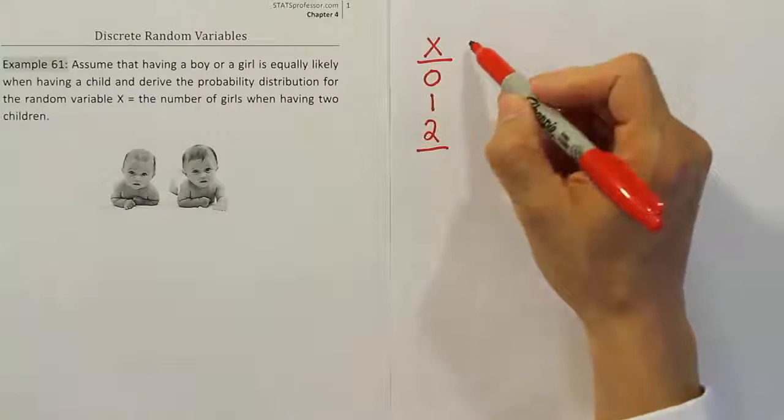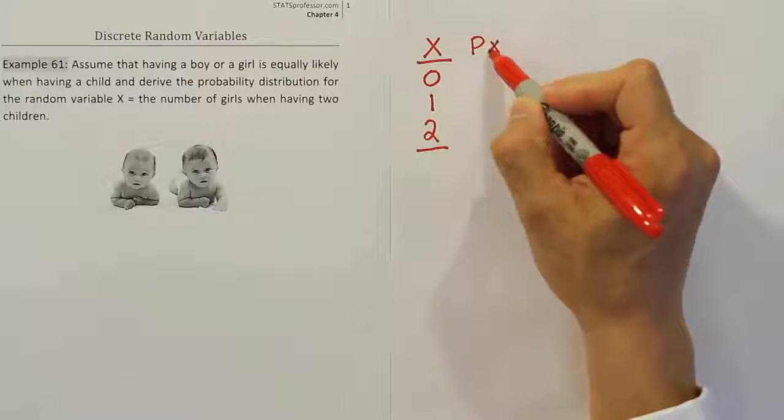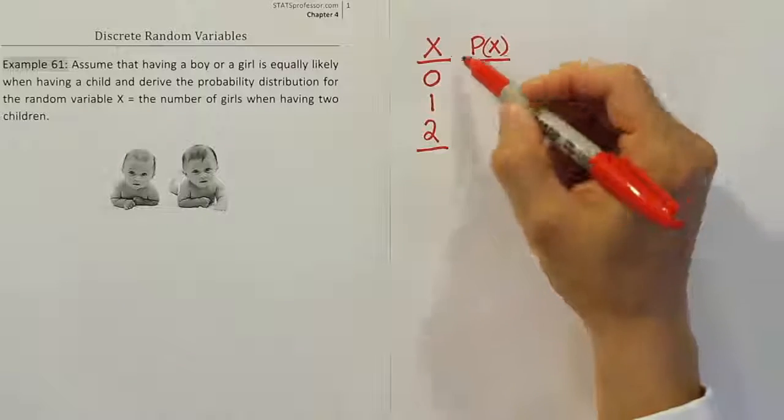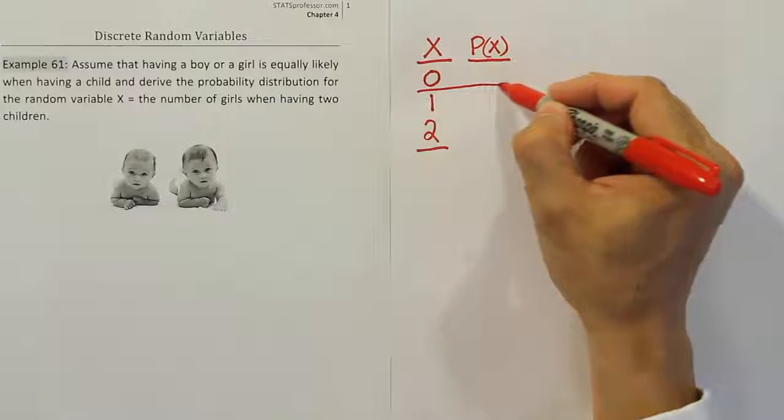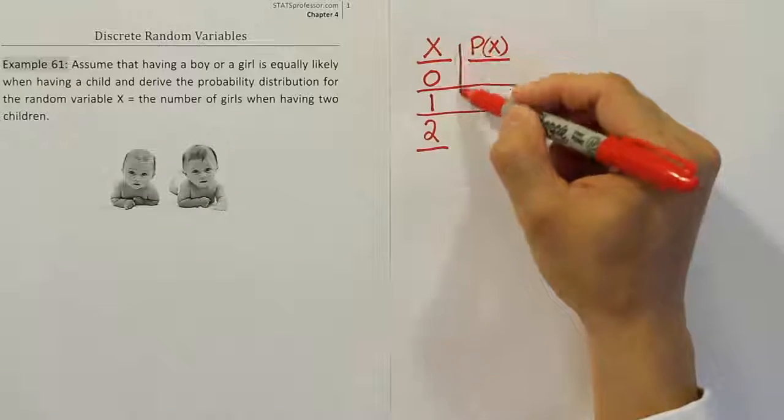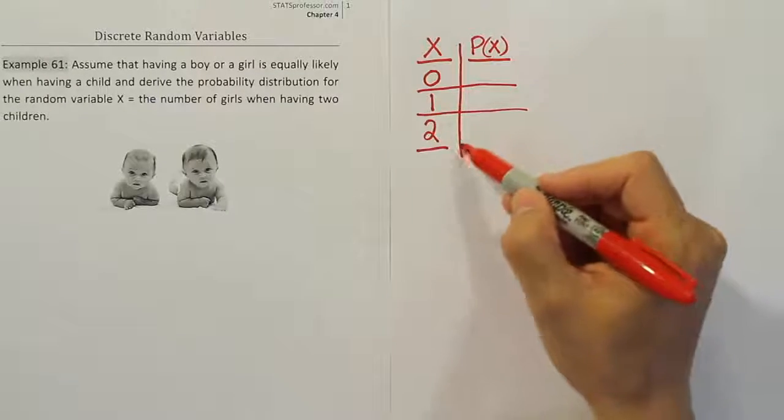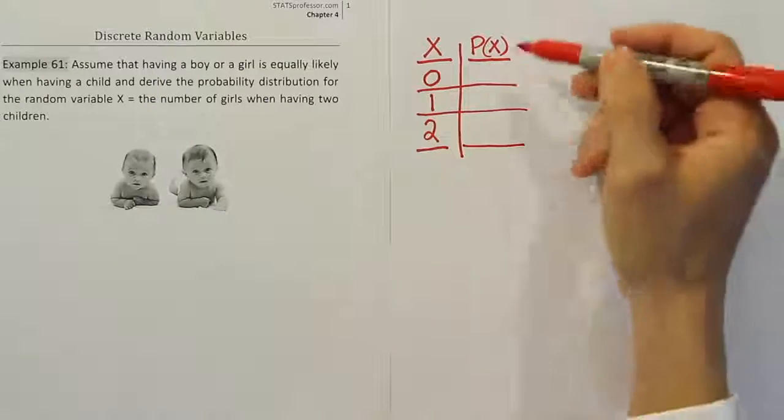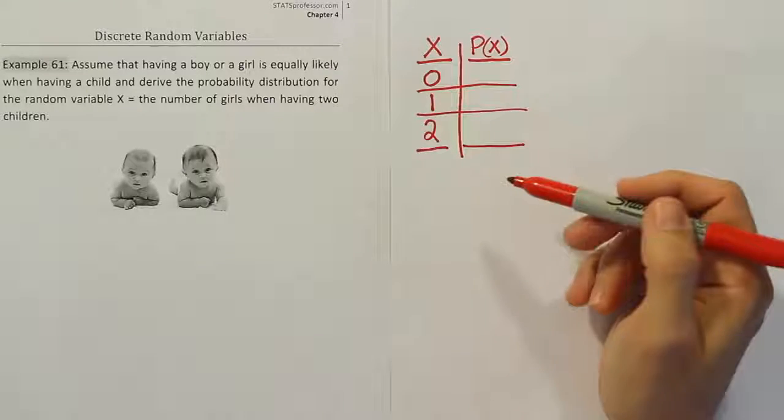From there, we have a probability for each of these events. So we're going to list the probabilities next to the events, and those will be all the associated probabilities for the problem. Once we're done, we'll talk about some properties the table should have.